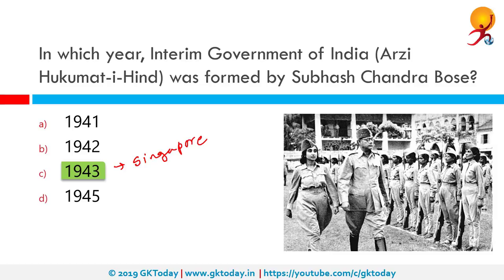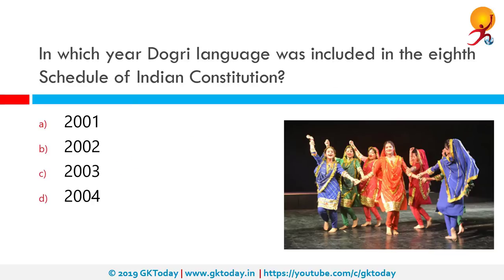In which year was Dogri language included in the 8th Schedule of the Indian Constitution? Dogri language came into the constitution in 2003 via the 92nd Amendment Bill. The four new languages added together were Bodo, Maithili, Dogri and Santali. The 8th Schedule is the schedule that contains all the official languages that can be used within India to perform any government tasks.